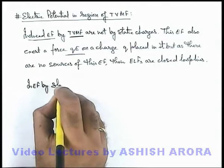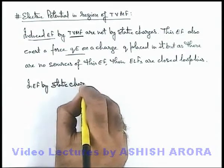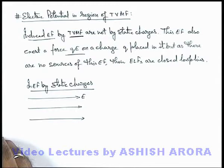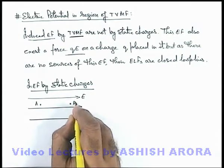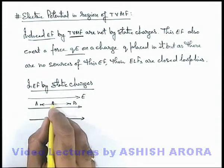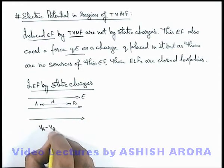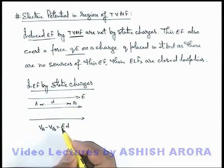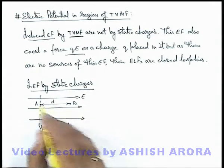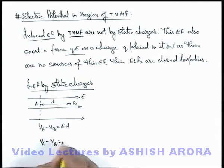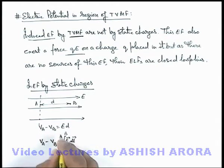In the electric field due to static charges, if there exists a uniform electric field and we consider two points A and B, then in the direction of the electric field the electric potential decreases. If the separation between the two points is d, we can write V_A minus V_B equals E·d. This is the work done in shifting a unit positive charge from point A to B. There also exist equipotential surfaces normal to the electric field. For a non-uniform electric field, we can write V_A minus V_B equals the integration of E dot dl from A to B.